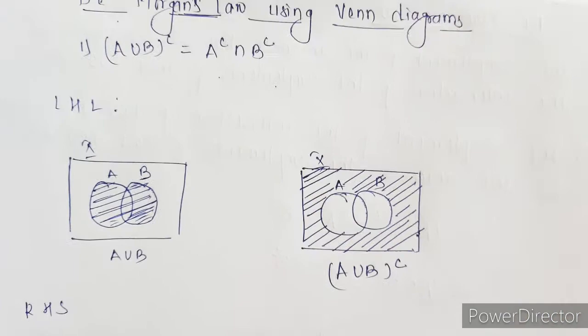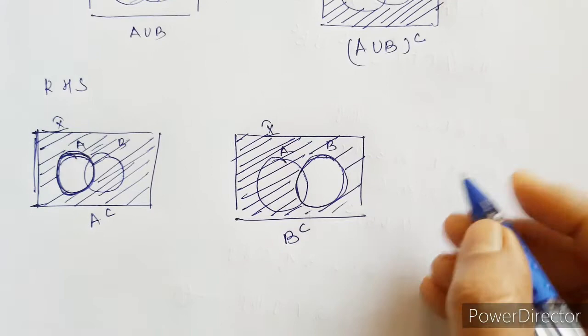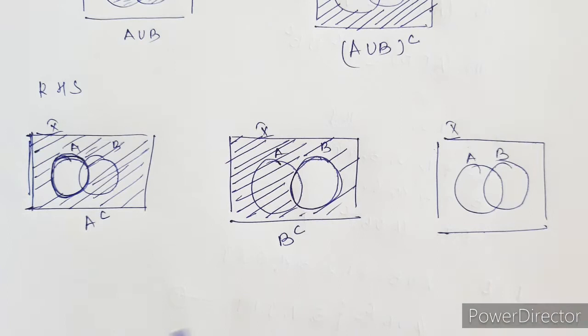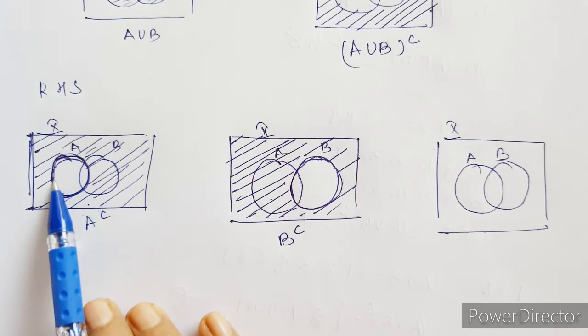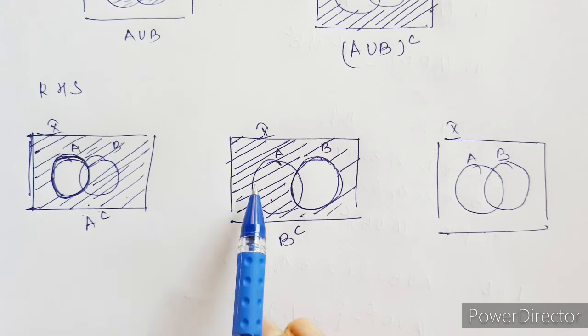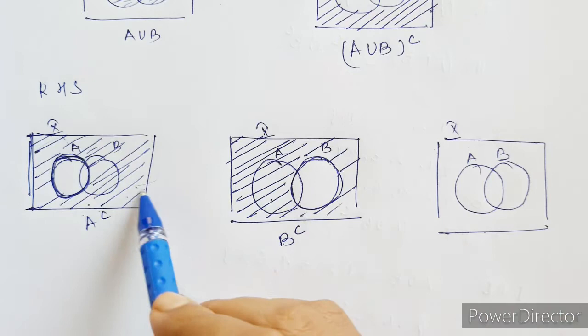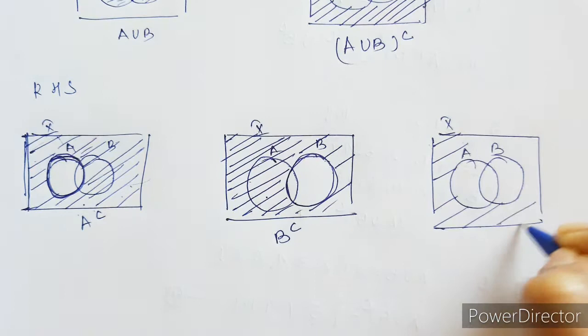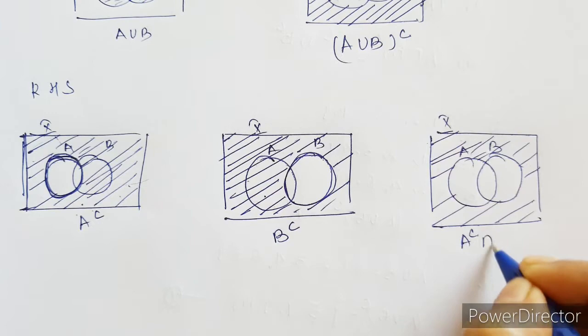Next we need to find A complement intersection B complement. Draw A, B, and the universal set. In A complement we do not shade circle A; in B complement we do not shade circle B. In the first one we have everything outside circle A, and in the second everything outside circle B. The common shaded region is the outside part — outside both circles. So A complement intersection B complement is nothing but this outside region.